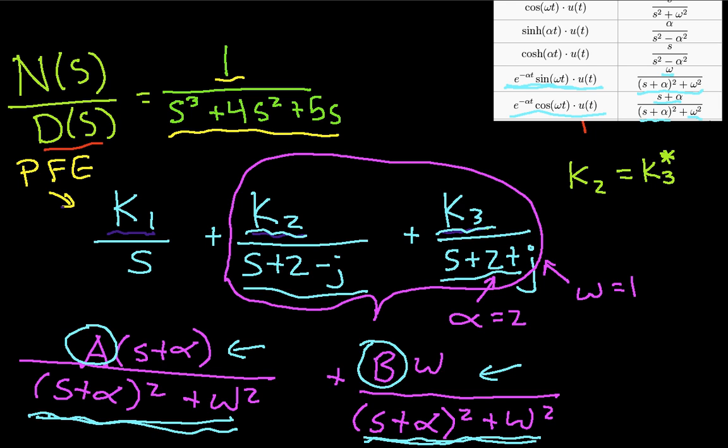So, I can actually now just write down what the time functions are that correspond to these two terms. It would be a, e to the minus 2t, because alpha is equal to 2, cosine t, u of t. Plus b, e to the minus 2t sine t. And those are both times u of t. So, basically, what we've been able to do is do some manipulation to get this into the form where we can now use the table to do the inverse Laplace transform.